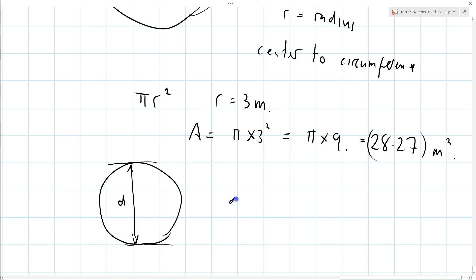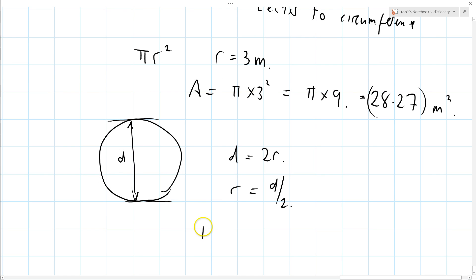D equals 2r. So that means that r equals d over 2. So my area is pi r squared, but that's equal to pi times d over 2 all squared, which is pi d squared over 4.